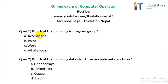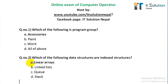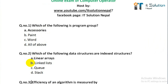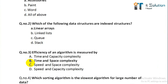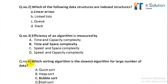Question number one: which of the following is a program group? Its correct answer is X Stories. Question number two: which of the following data structure are index structure? Its correct answer is linear array. Question number three: efficiency of an algorithm is measured by? Its correct answer is option B, time and space complexity.